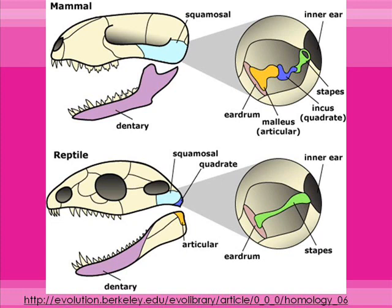On the reptile you can see the dark blue and yellow bones at the back of the jaw. When you look for those same bones on the mammal, they have moved to the inner ear area. So those three little bones inside your ear — the anvil, the hammer, and the stirrups, or the malleus, the incus, and the stapes — are thought to have originally been part of the jaws of our ancestors.